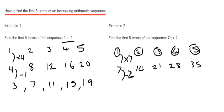So 7 take away 2 is 5, 14 take away 2 is 12, 21 take away 2 is 19, 28 take away 2 is 26 and 35 take away 2 is 33. And there's our first five numbers in this sequence.